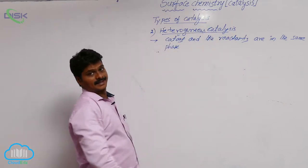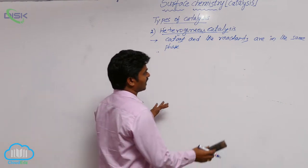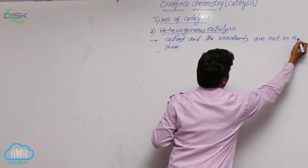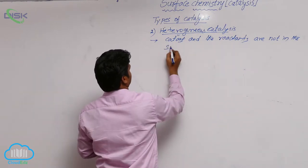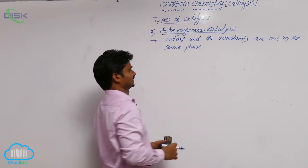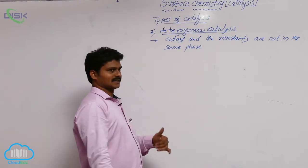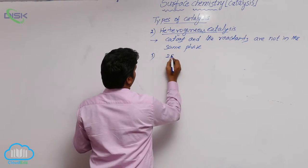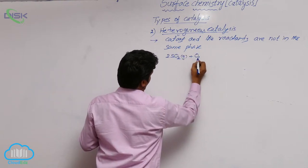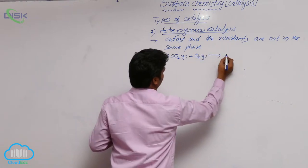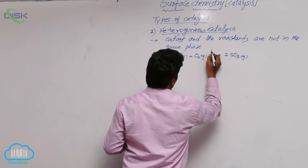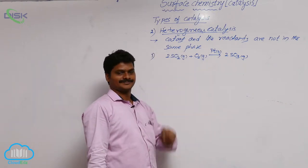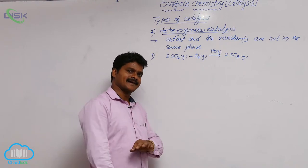In heterogeneous catalysis, the catalyst and reactants are not in the same phase — they are present in different phases. For example, in the reaction 2SO2 gas + O2 gas → 2SO3 gas, platinum is the catalyst which is in the solid state. So the reactants are gas phase and the catalyst is solid, meaning catalyst and reactants are not in the same phase.